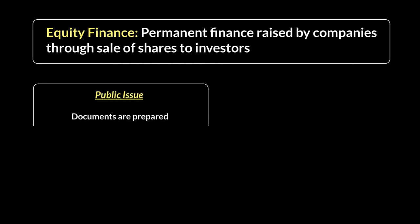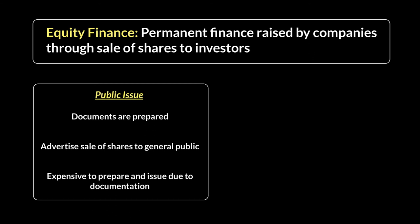The documents are sent to government authorities for approval, and only after approval can the company start advertising the sale of shares to the general public. This process is known as book building, where shares are first offered to high-net-worth individuals or companies who will spend large amounts, to clear bigger chunks quickly. Whatever is left is then sold on the stock exchange to individual investors. There's not much restriction on who can buy as long as they meet the basic criteria. These documents are expensive and time-consuming because they require lawyers, bankers, and company experts spending months of preparation.